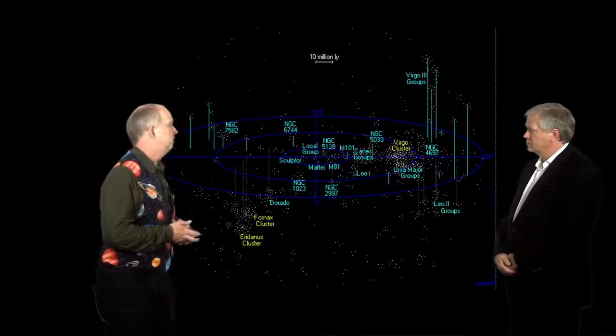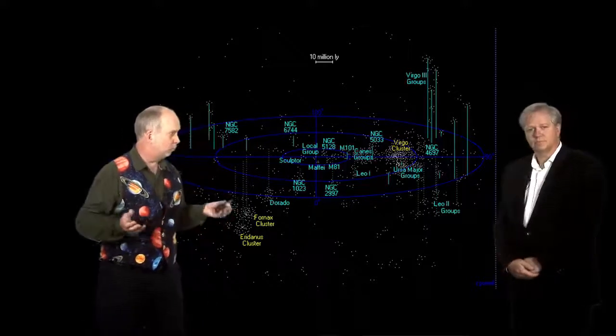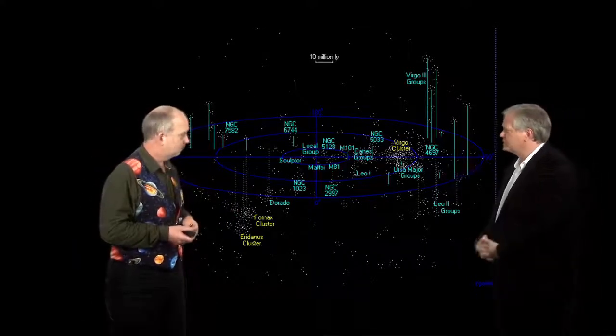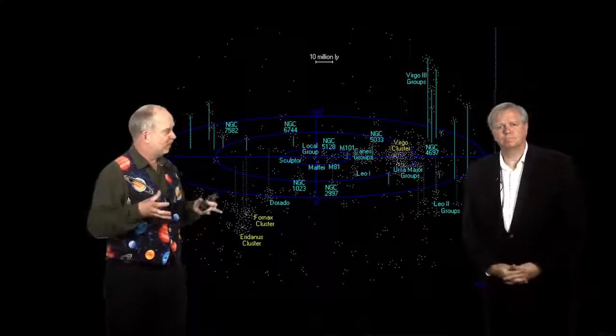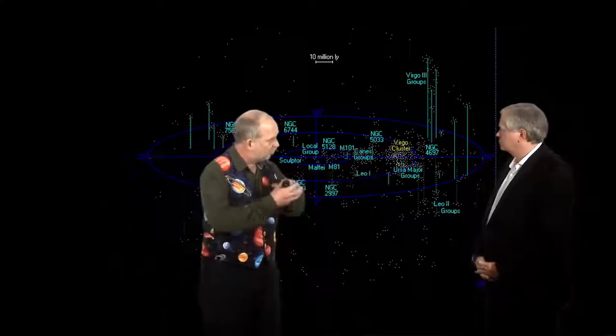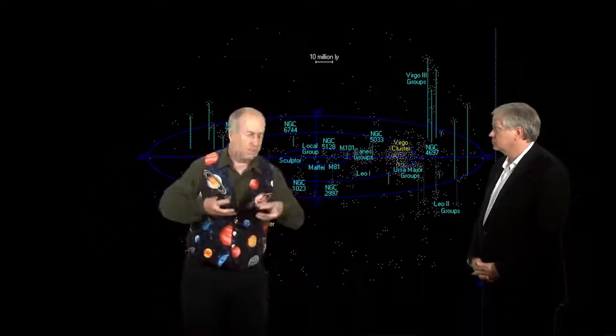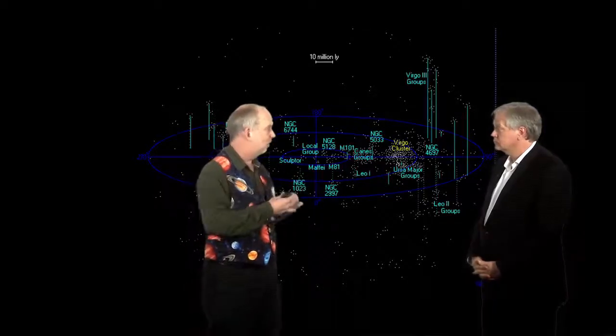And on this scale, gravity totally wins. It's much more important. So, we're all bound together, sort of like a swarm of bees. And the same thing applies to any galaxy cluster, like, for example, the Virgo cluster over here. Internally within it, the gravity is much stronger than the expansion, so the things are just going to swarm around.